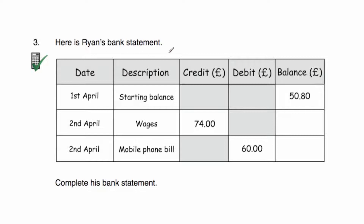Question three: here's Ryan's bank statement. We have dates of 1st and 2nd of April with a starting balance of £50.80. His wages are credited — £74 is paid into his account. So we add 74 onto 50.80: that's £124.80. Then he pays his mobile phone bill of £60 — a debit coming out of his account. Taking 60 away from £124.80 gives a balance of £64.80. Those are the two missing values — the bank statement is completed.